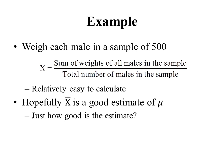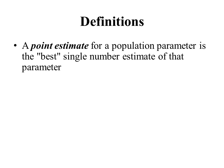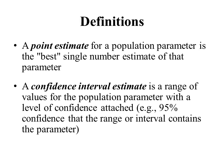In this chapter, we're going to talk about how we can measure how good an estimate is. To start, we need some definitions. A point estimate for a population parameter is the best single number estimate of that parameter — simply a single number estimate. Related to that is a confidence interval estimate, which is a range of possible values for the parameter with a level of confidence attached. The confidence level we're often going to use is 95%. We start with a point estimate, then calculate a confidence interval estimate, which is a range of possible values.